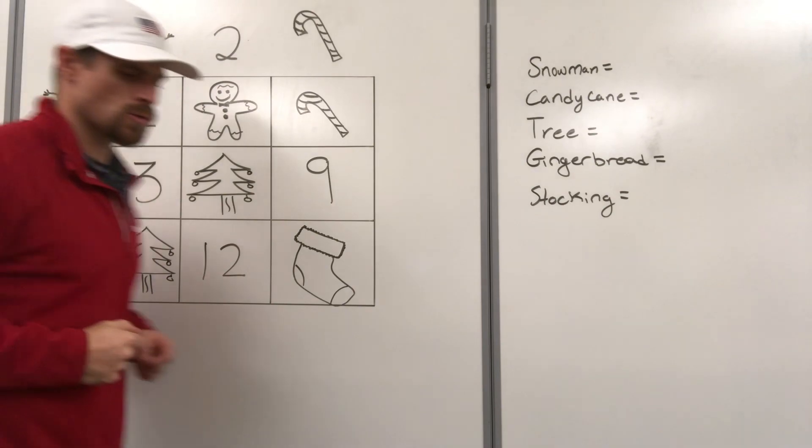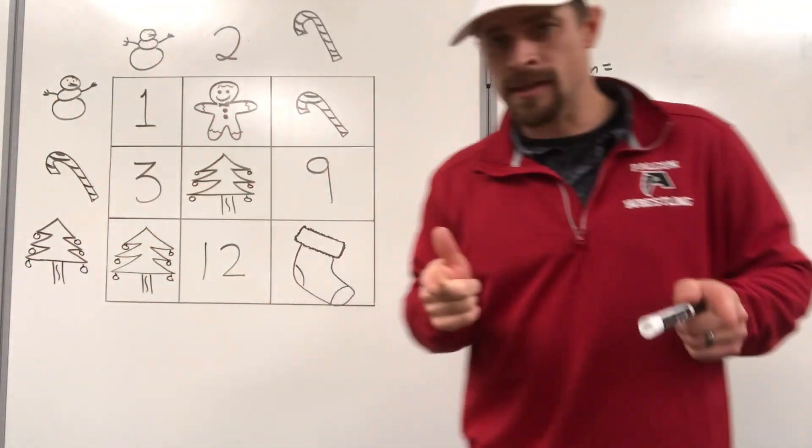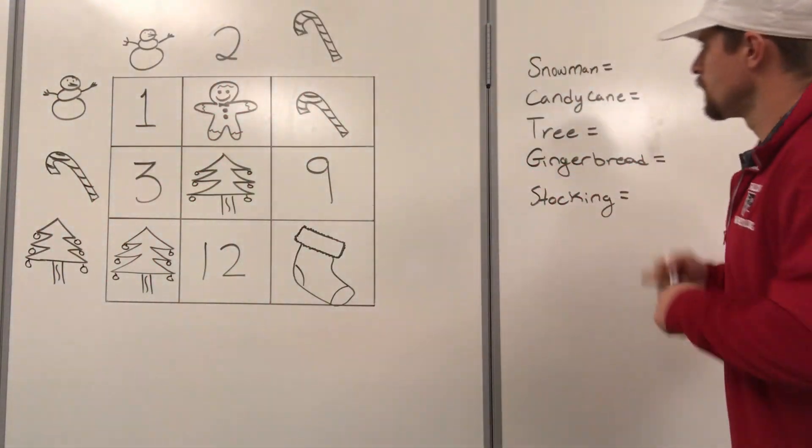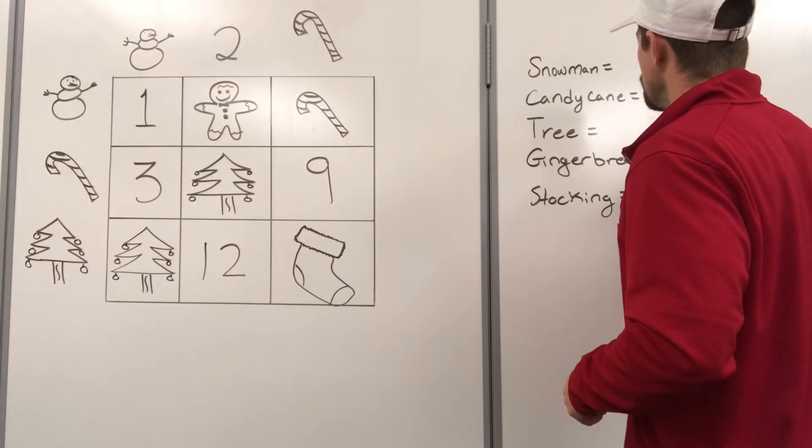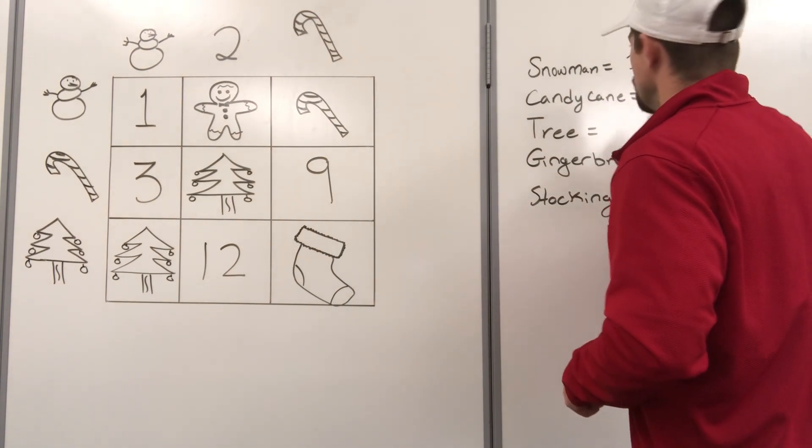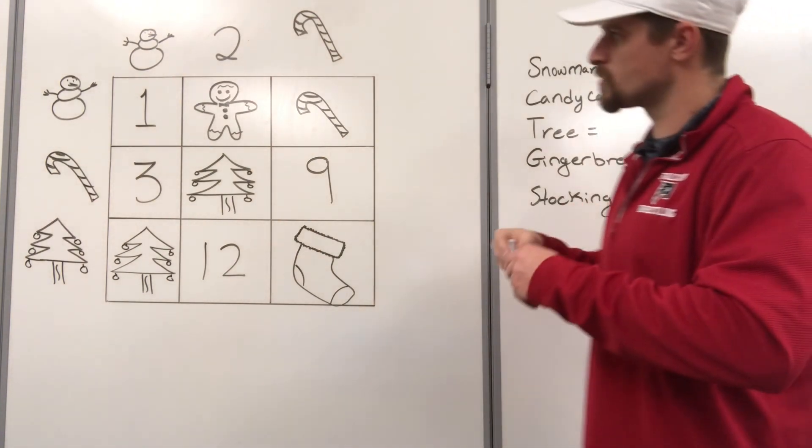Snowman times snowman equals one. I think there's only one way to make that work. What number times itself would make one? One. So now that we know a snowman's worth one.